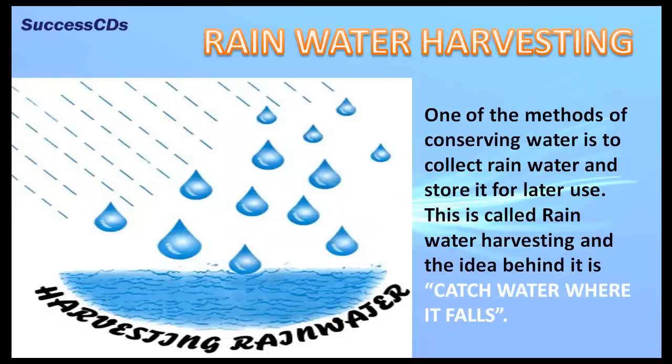One of the methods of conserving water is to collect rainwater and store it for later use. This is called rainwater harvesting. The idea behind it is to catch water where it falls.